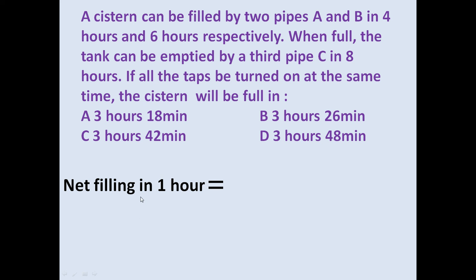To answer this question, let us determine the net filling of the tank in 1 hour. A can fill the tank in 4 hours, so in 1 hour A will fill 1/4. B can fill the tank in 6 hours, so in 1 hour B will fill 1/6. Pipe C can empty it in 8 hours, so in 1 hour C will drain out 1/8.